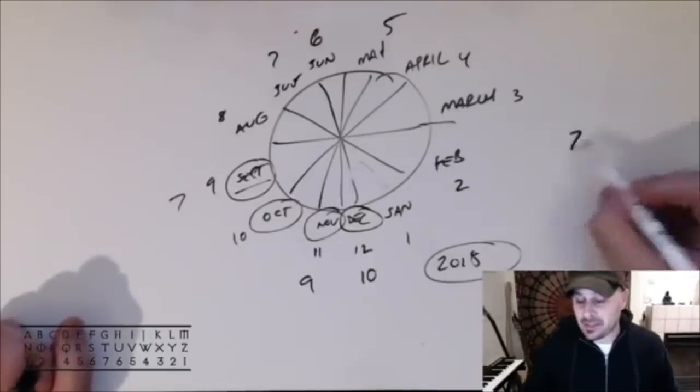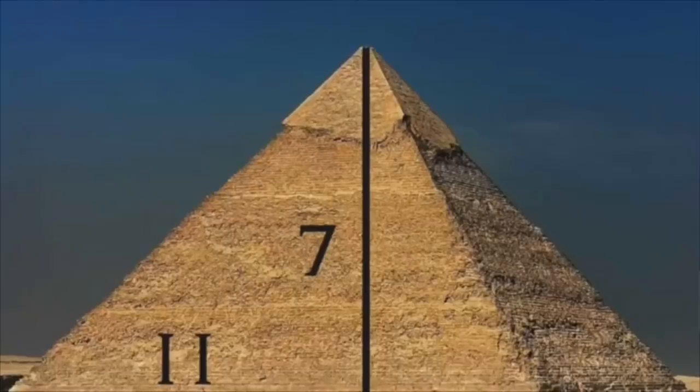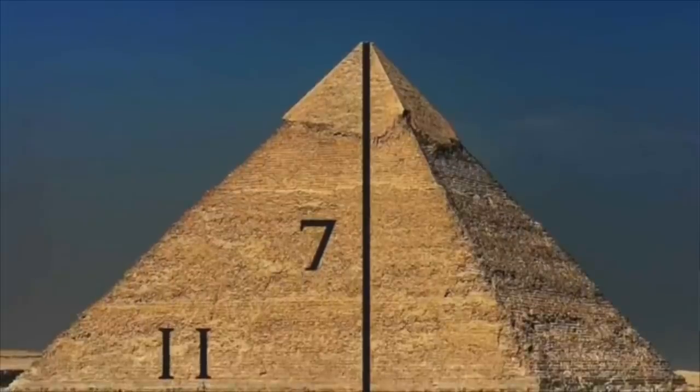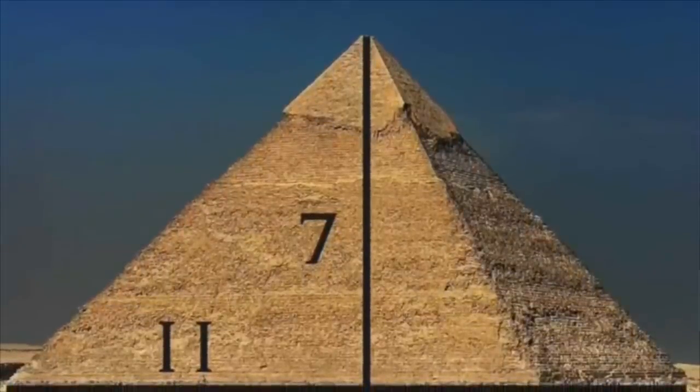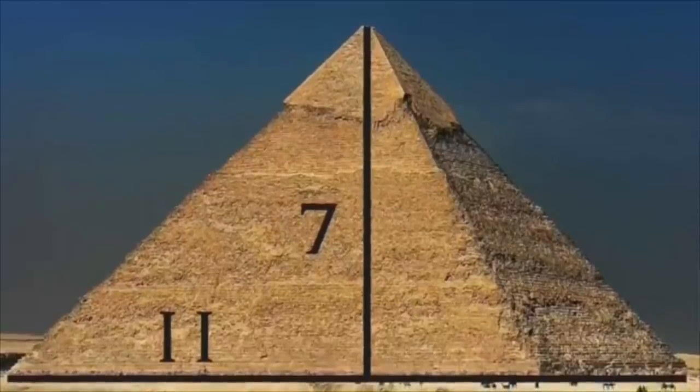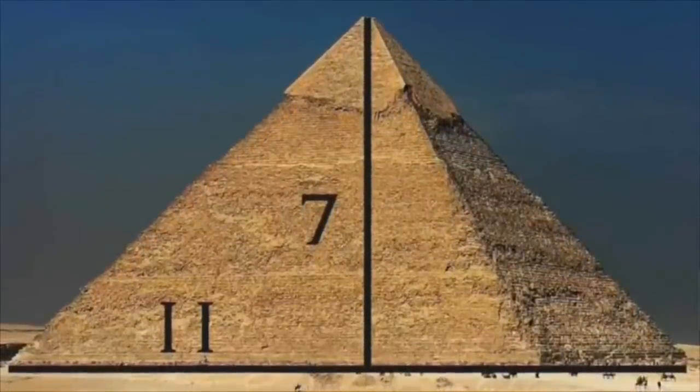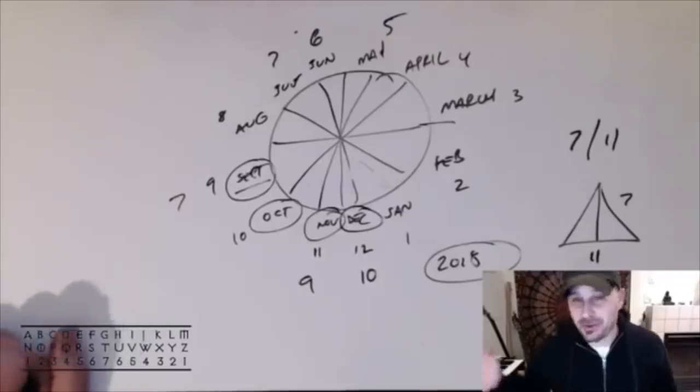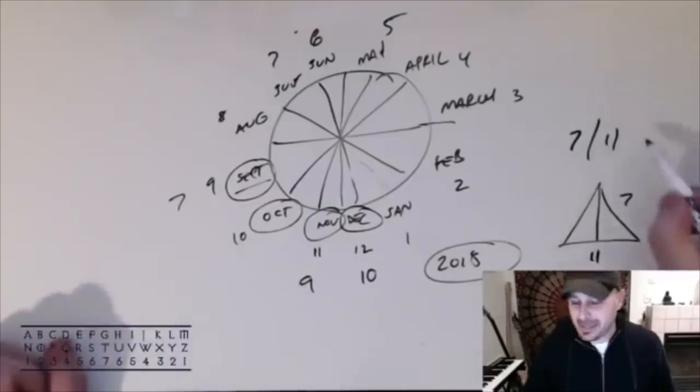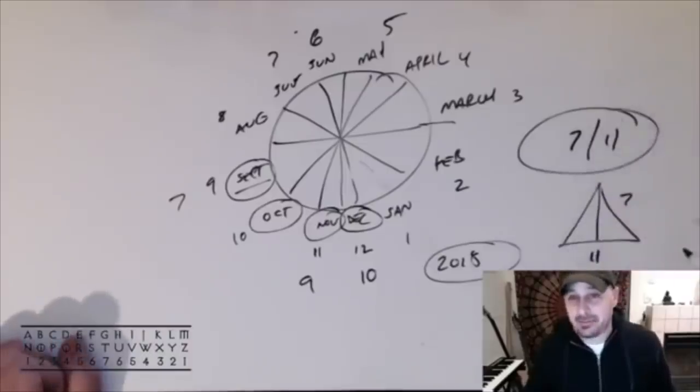7/11 is the proportions of the Great Pyramid of Giza. Its base is 11 units, height 7, and this Great Pyramid of Giza squares the circle. I don't have time to cover this, this is a lecture in and of itself. But September 11 didn't happen on 9/11, it happened on 7/11. This is an issue to me.